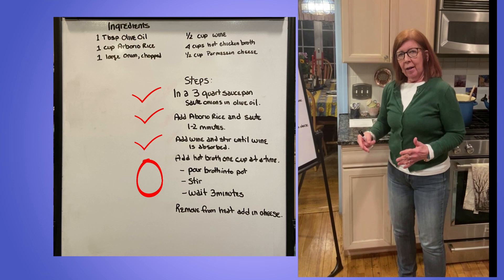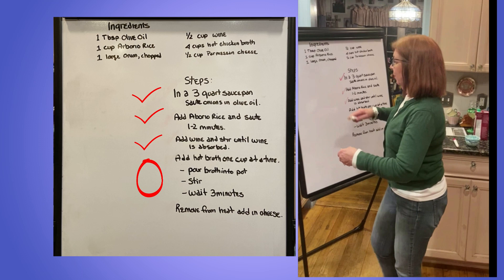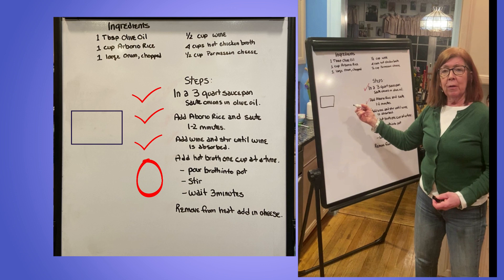To track the number of cups I've added to the saucepan, I will draw a box on the whiteboard. I'm going to label this box and give it a name — the name I'm going to give it is "cup count."